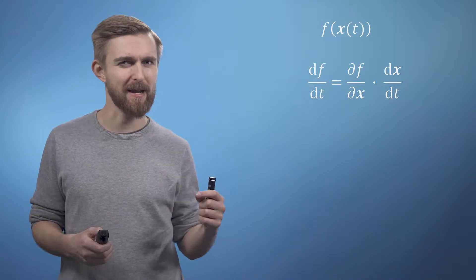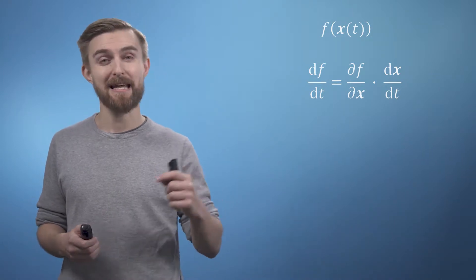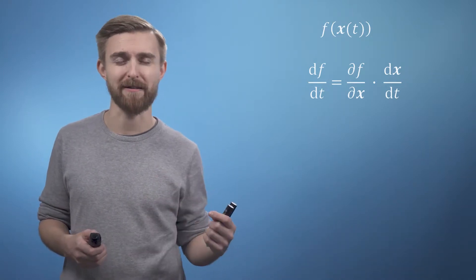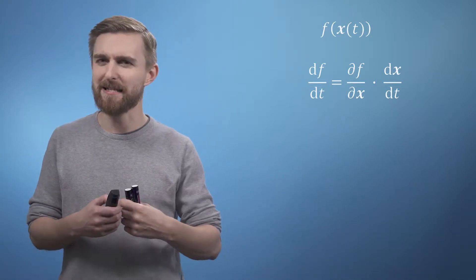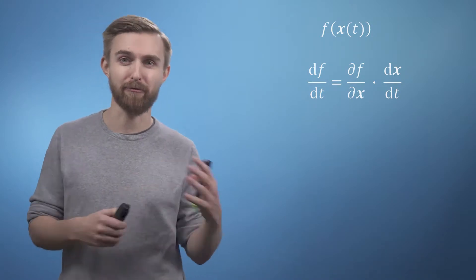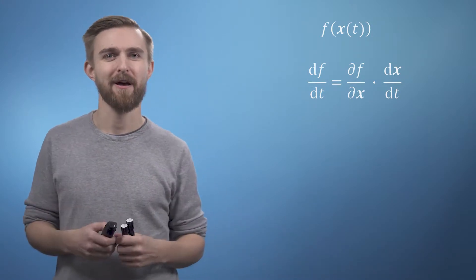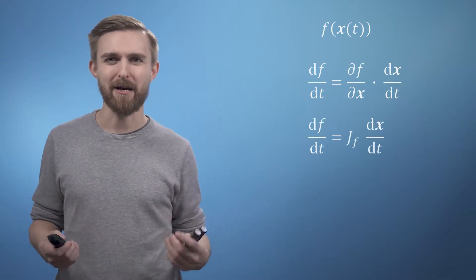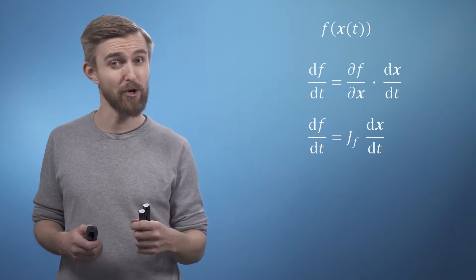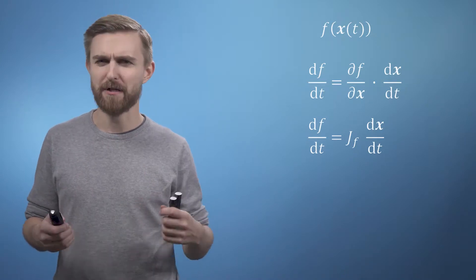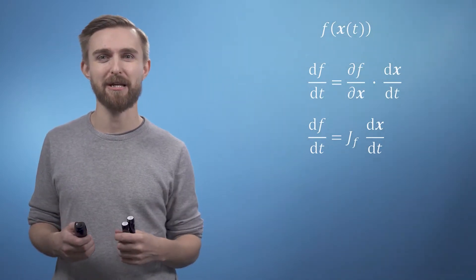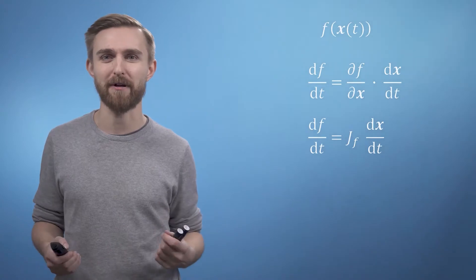The last thing to realize is that taking the dot product of two column vectors is the same operation as multiplying a row vector by a column vector. So finally, we can see that our old friend the Jacobian offers us perhaps the most convenient representation of the multivariate chain rule.